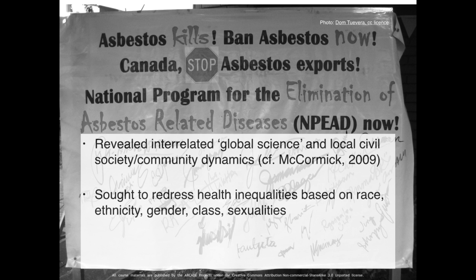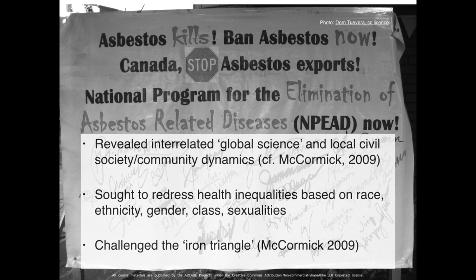McCormick calls this the iron triangle between companies, governments, and researchers, in which these three categories of people work together, through regulation, through funding patterns, and through prioritization, to co-produce what is then considered to be expert, cutting-edge science. Democratizing health movements have shown how this scientization of politics can exclude local citizens from decision-making. So activists in social movements often seek to contest large-scale financial, industrial, and government interests, and to advance alternative understandings of the problem.